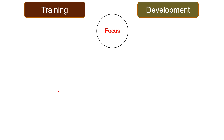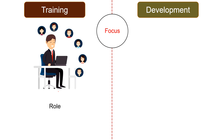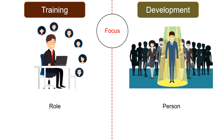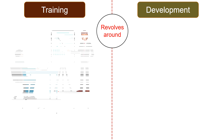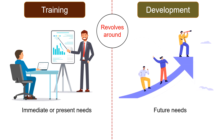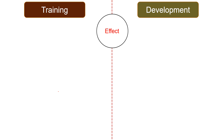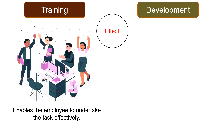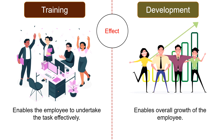Focus: while training focuses on role-specific job or role requirements, development focuses on the person — it is more conceptual and focuses on the overall improvement of the individual. While training revolves around immediate or present needs of the job, development is futuristic. Effect: training enables the employee to undertake the task effectively, while development enables overall growth of the employee.